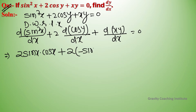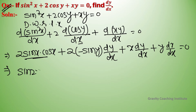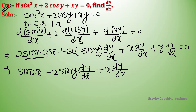For 2cos(y), the derivative is minus 2sin(y) · dy/dx since y is a function of x. For the xy term, the product rule is used: y · dx/dx + x · dy/dx. So we get: sin(2x) − 2sin(y) · dy/dx + x · dy/dx + y = 0.